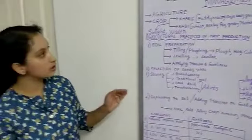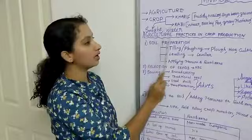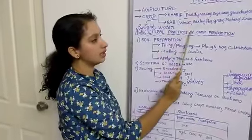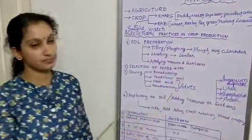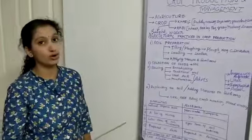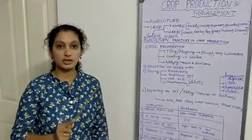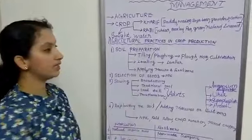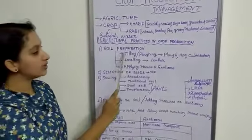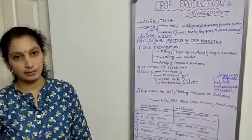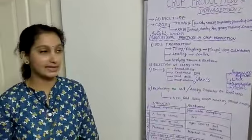Next, we are going to enter the main part of this lesson: agricultural practices in crop production. What are the agricultural practices we have to follow to get a good yield of a crop?